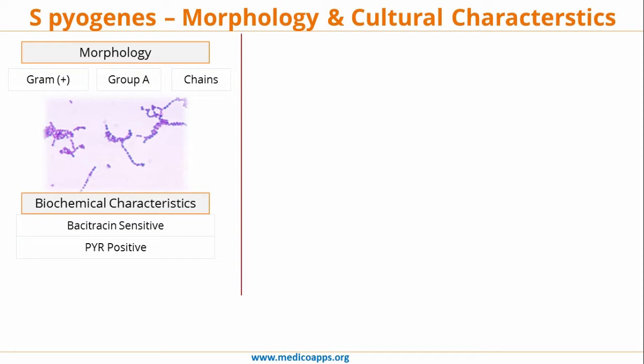The PYR test is used in presumptive diagnosis for Group A streptococci. It is both catalase negative and CAMP negative. The catalase test is used to differentiate between other gram-positive catalase-positive organisms like Staph aureus. The CAMP test is used to differentiate between Group A and Group B streptococci. Catalase-positive gram-positive cocci would be Staph aureus; catalase-negative gram-positive cocci would be Strep pyogenes. CAMP-negative is Group A and CAMP-positive is Group B streptococci.